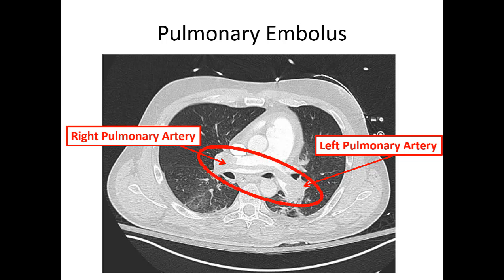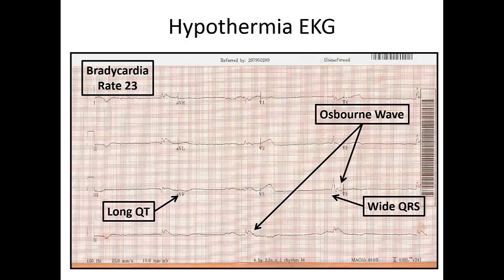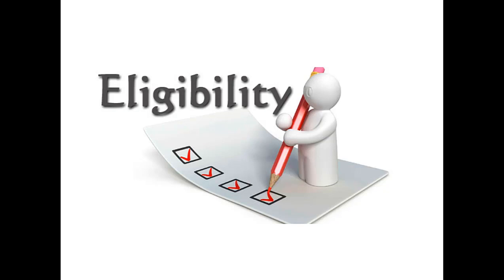Another perfect candidate is a hypothermic patient. We actually had this happen in Albuquerque this past January — a gentleman with a core temperature of about 61°F arrived at the hospital, they got him on the pump, and he walked out neurologically intact about a week later. On a hypothermic EKG they're usually bradycardic with a long QT, and it's a perfect example showing Osborne waves.